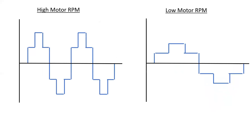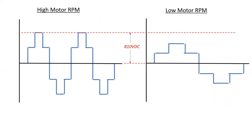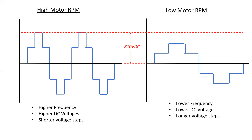For high motor RPM, we see high voltage, and the rate of positive and negative alternations is quite a bit higher. For low motor RPM, we have lower voltages and a longer spreading out of those positive and negative alternations. So high motor RPM means higher frequency, higher DC voltages, and shorter voltage steps. Low motor RPM means lower frequency, lower DC voltages, and longer voltage steps.